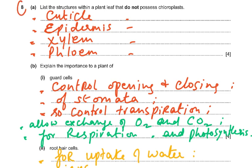Question 8A: list the structures within a plant leaf that do not possess chloroplasts. The four answers are: cuticle, epidermis, xylem, and phloem. These are all within the leaf — the question specifically asks about structures within the leaf, so roots or stems would not be accepted.